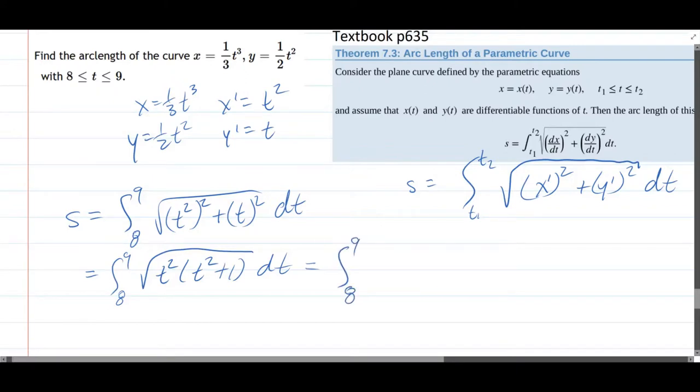And then the t squared can come out as just a regular t. t is positive, so I don't have to worry about it coming out as an absolute value of t.